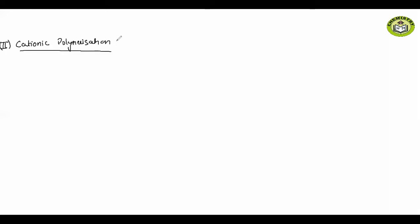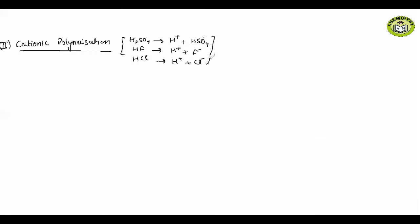All cationic polymerizations are initiated by a strong acid. For example, H2SO4 gives H+ plus HSO4-, HF gives H+ plus F-, and HCl gives H+ plus Cl-. Please note that along with H+, the counter negative ion is also present in the reaction.